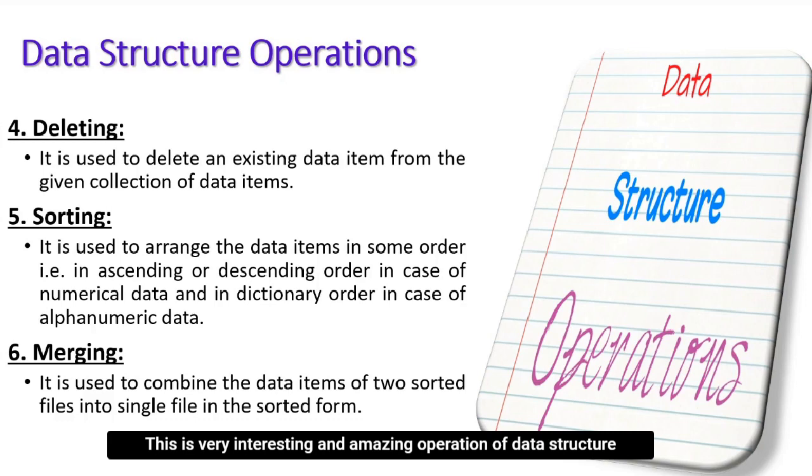Sorting is a very interesting and amazing operation of data structures. Sorting means arranging data elements in logical orders, for example ascending and descending order. The last one is merging. Merging means combining data elements from two or more data structures into one.